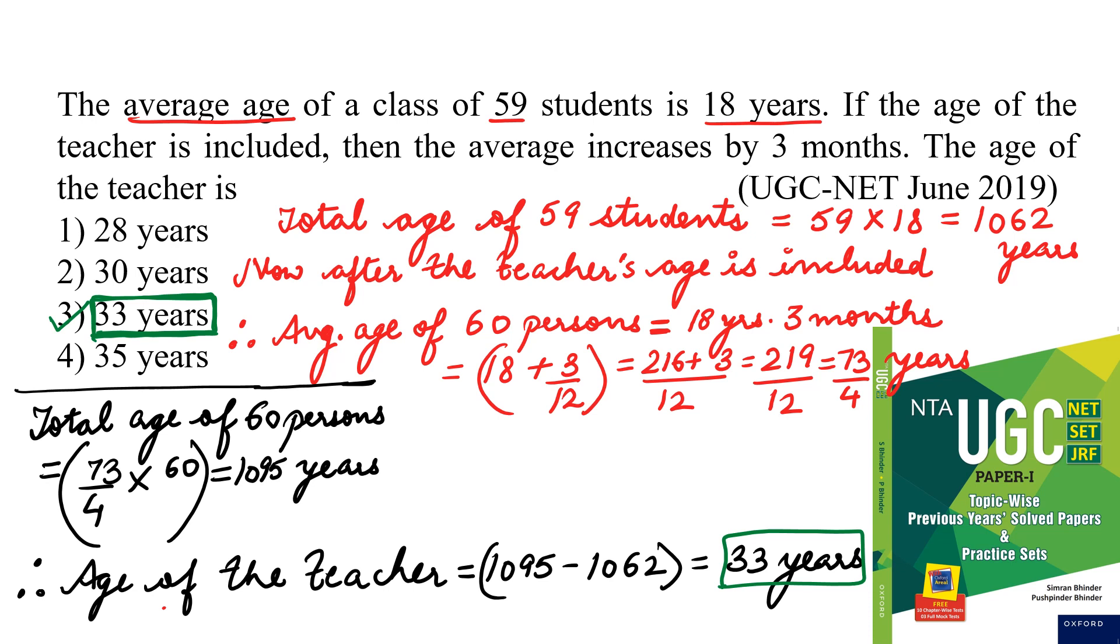Let's understand. Total age of 59 students, we can calculate using our basic formula. It is equal to 59 into 18. Because average is given and we know number of students, so we will multiply average into number of students, that is 59 into 18, and we will get total age of 59 students as 1062 years. Then, now after the teacher's age is included, if we include the teacher's age also, that means average age of 60 persons, one person is increasing, so instead of 59 it will become 60.